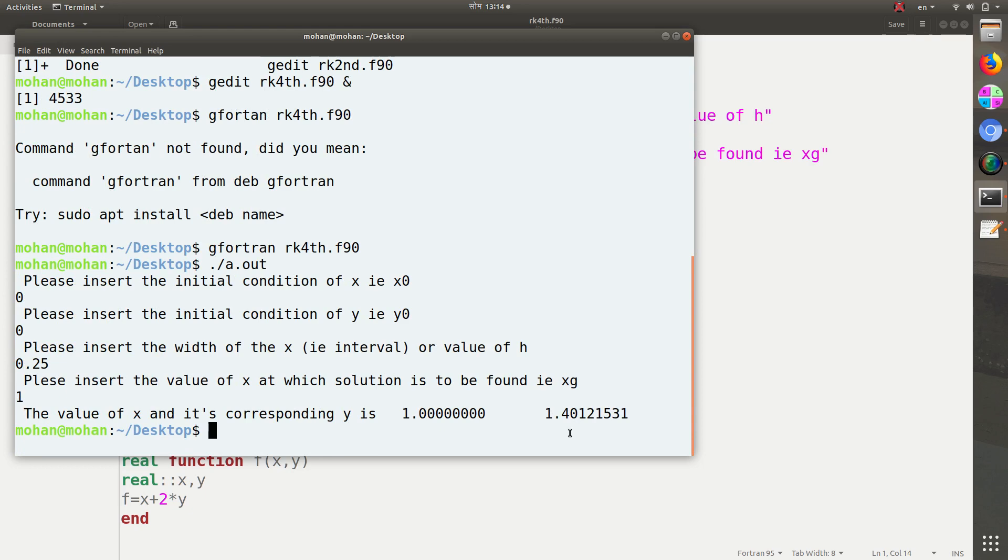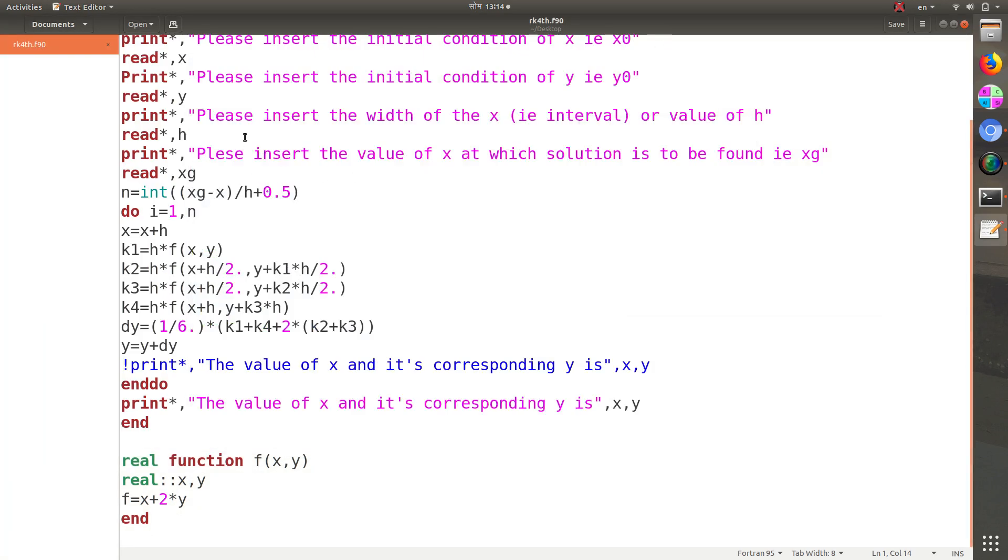This is slightly more useful than the second order because that contains more error as it uses only two orders. But here in the fourth order we are using four values, and this interval is more precise than that of the second order Runge-Kutta method.